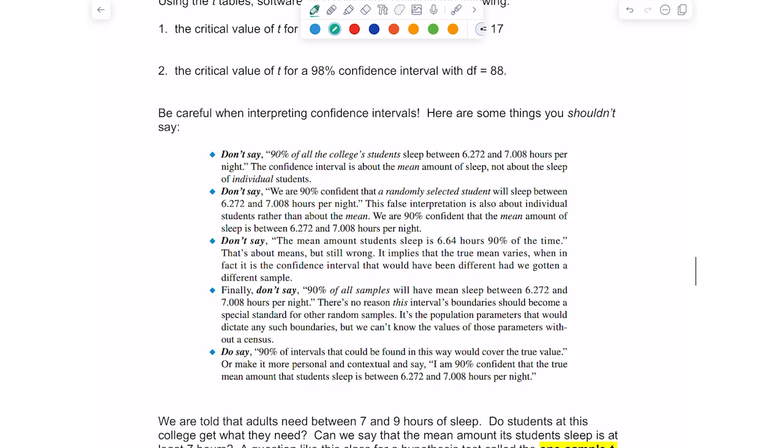So what you do want to say is something like 90% of intervals that could be found in this way would cover the true value, or make it more personal and contextual. Say something like I am 90% confident that the true mean amount that students sleep is between 6.72 and 7.008 hours per night.